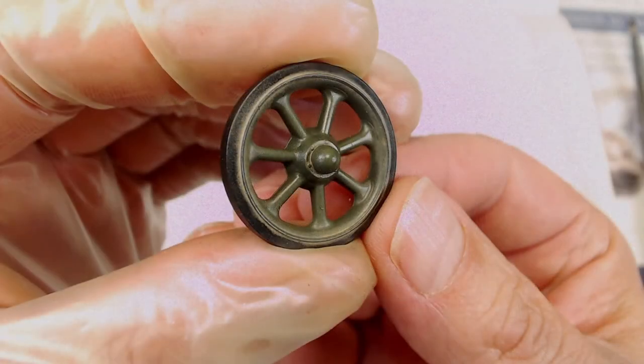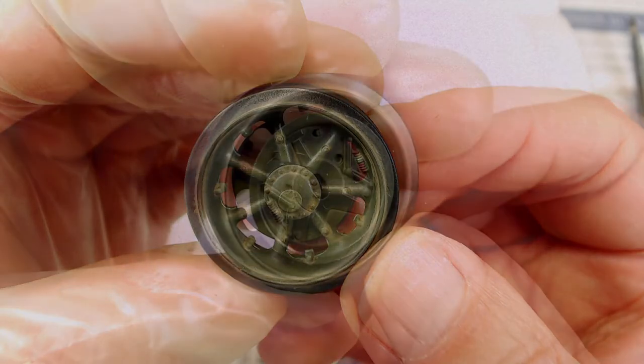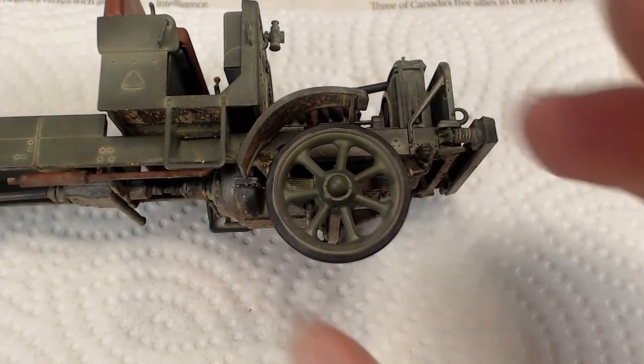The wheels were finished with our light sienna pin wash. We can then attach the wheels to the frame with thick CA glue.